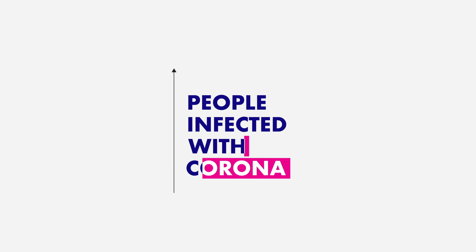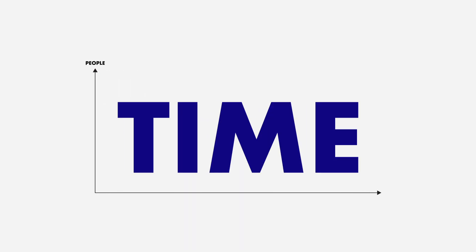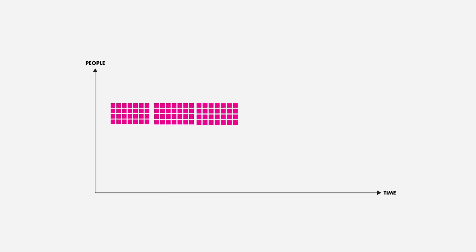Well, let's start with the lines. This vertical line here counts the number of people infected with corona. This line at the bottom counts the time, just like a calendar for days, weeks or months.